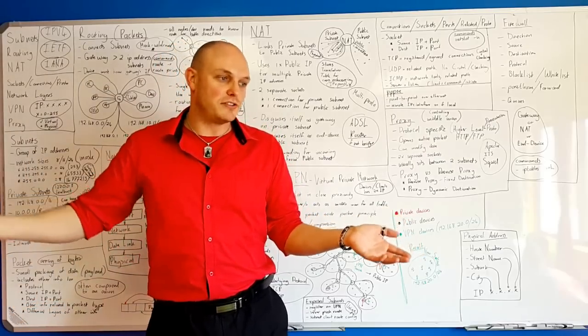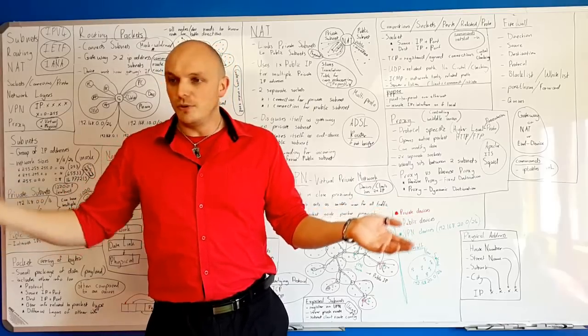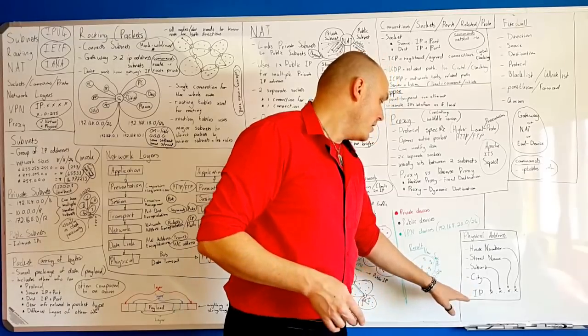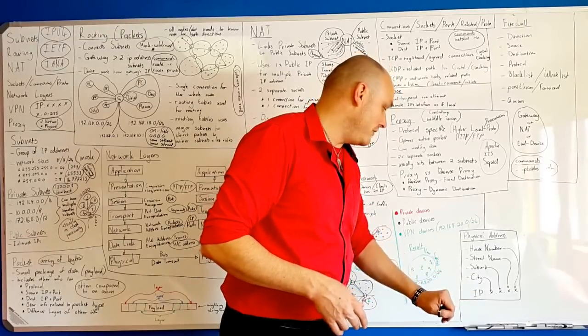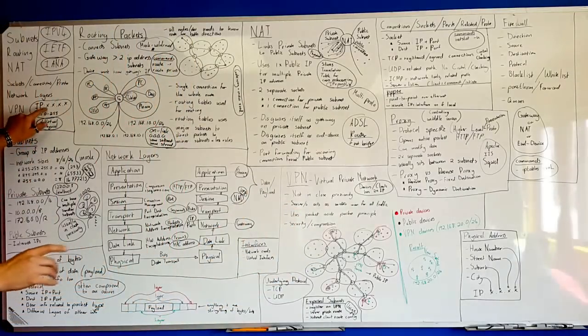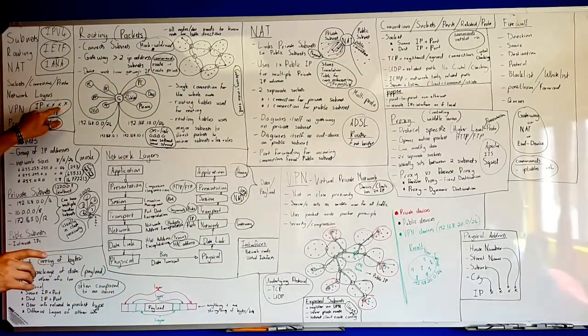And obviously you can go into country and province and state as well. But for this practice, we're only going to go down to the city level. And you'll see with an IP address, it's always four digits.